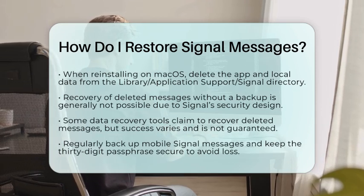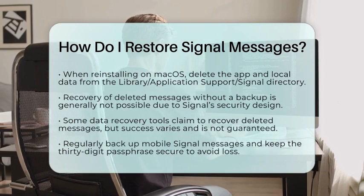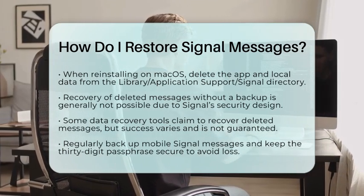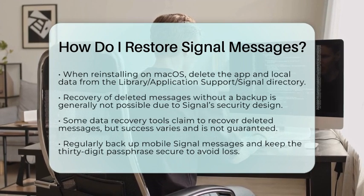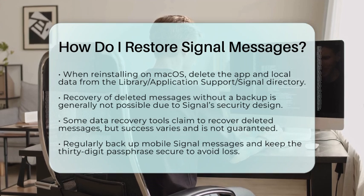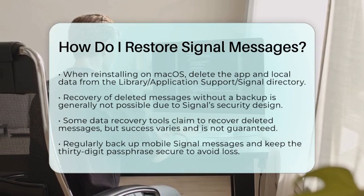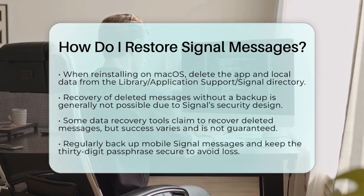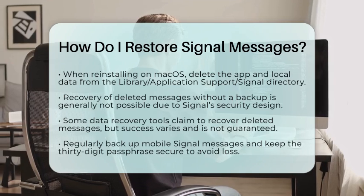For macOS users, when reinstalling Signal desktop, ensure you remove both the app and associated data folders to avoid any corrupted states. Regularly back up your mobile Signal messages using the app's backup feature before switching devices or resetting. Keep your 30-digit passphrase secure and accessible, as losing it means losing access to backed-up messages. When transferring Signal messages between devices, always use the official Signal transfer or restore process to maintain security.